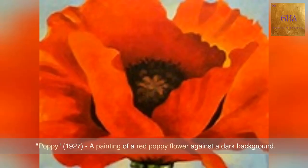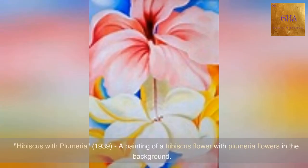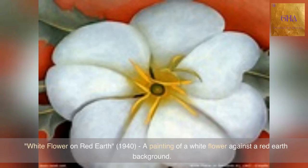Poppy, 1927 — a painting of a red poppy flower against a dark background. Hibiscus with Plumeria, 1939 — a painting of a hibiscus flower with Plumeria flowers in the background. White Flower on Red Earth, 1940.